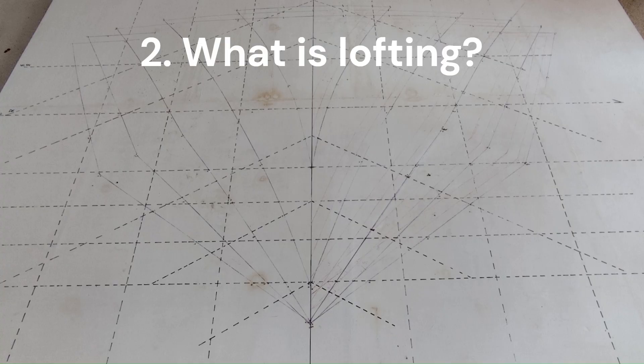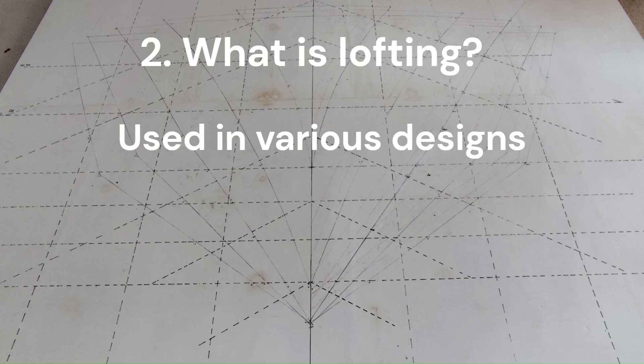Two, what is lofting? Lofting is a modeling technique used to create a 3D shape by defining a series of 2D cross-sectional profiles called lofts and then generating a smooth surface or solid that transitions between them. Lofting is not used only in boat building but also in aircraft design, automotive design, and 3D modeling, e.g., in software like SolidWorks, AutoCAD, Fusion 360.